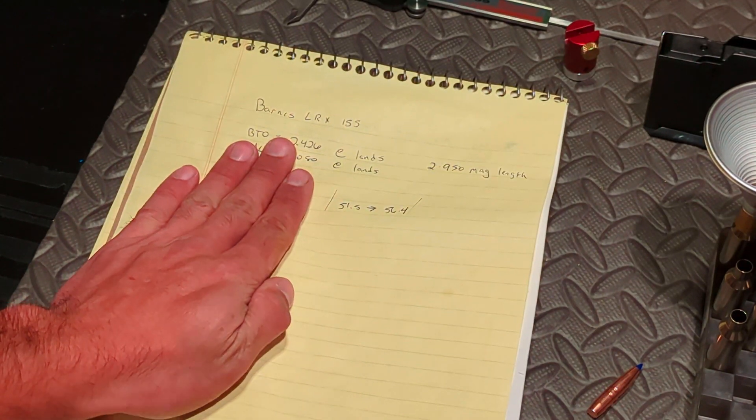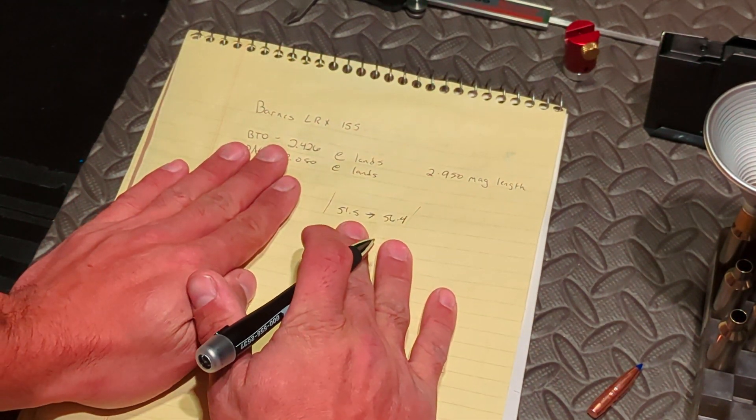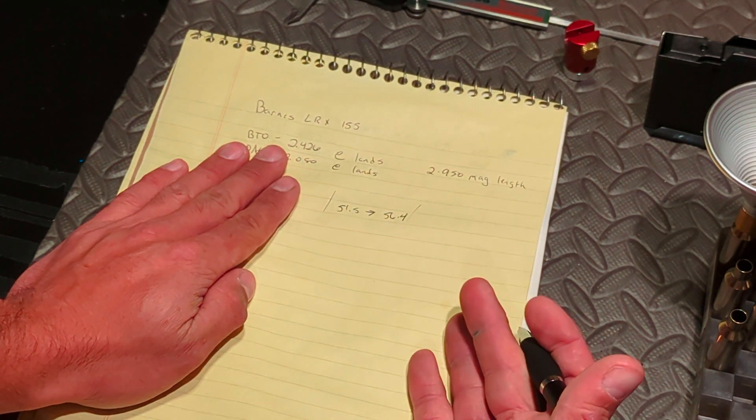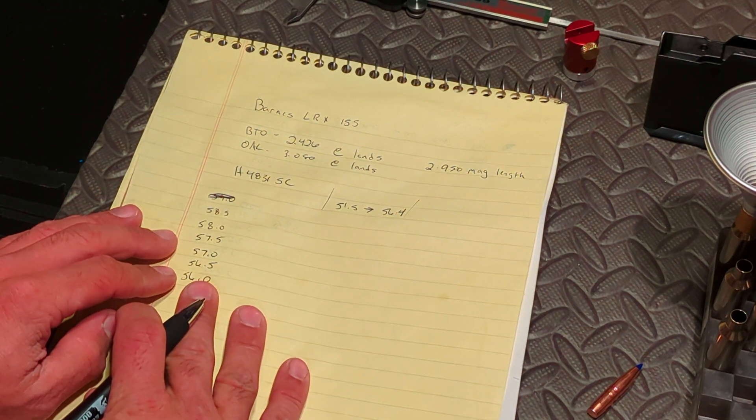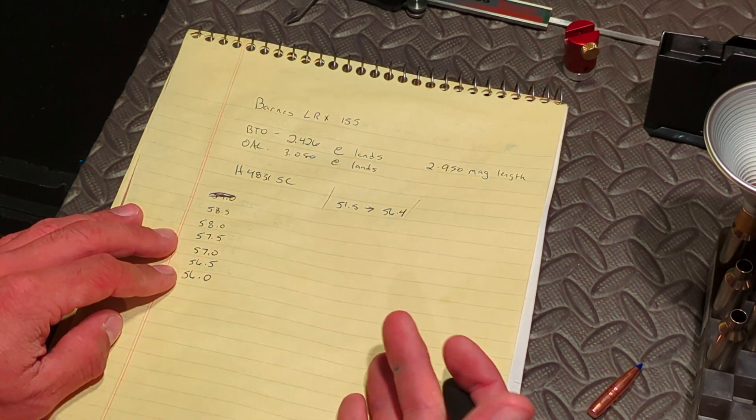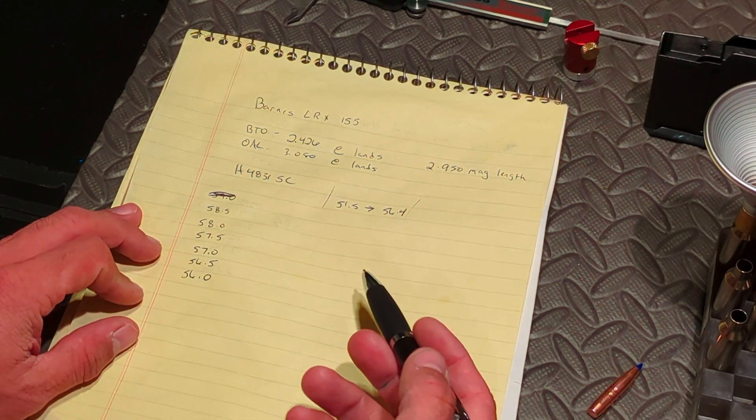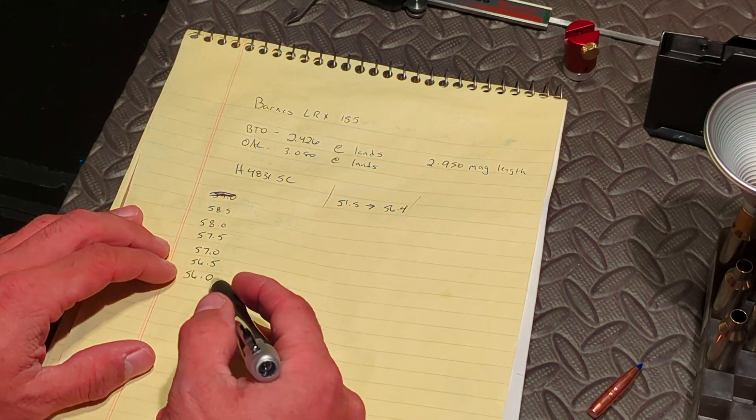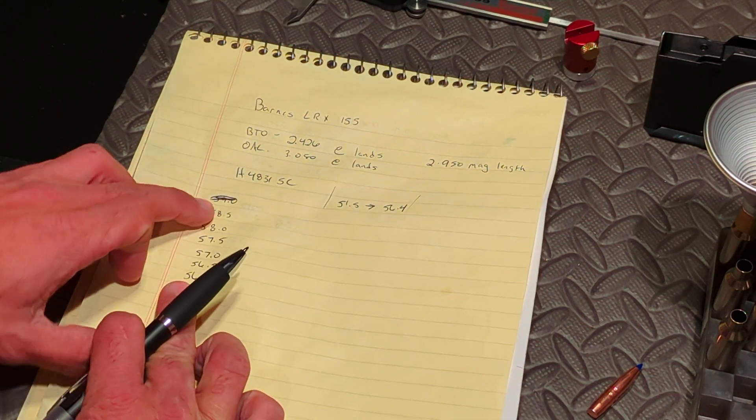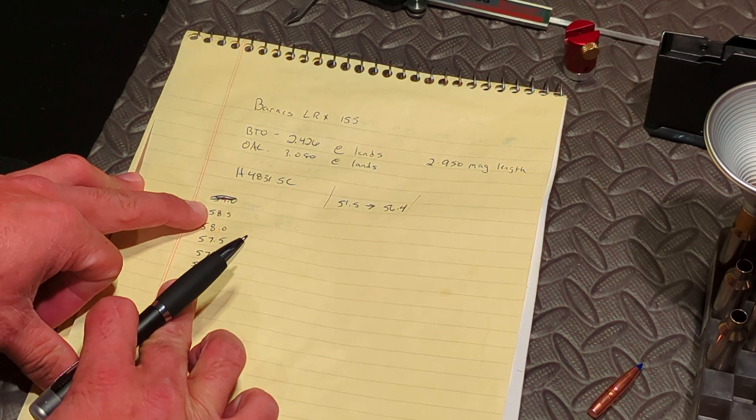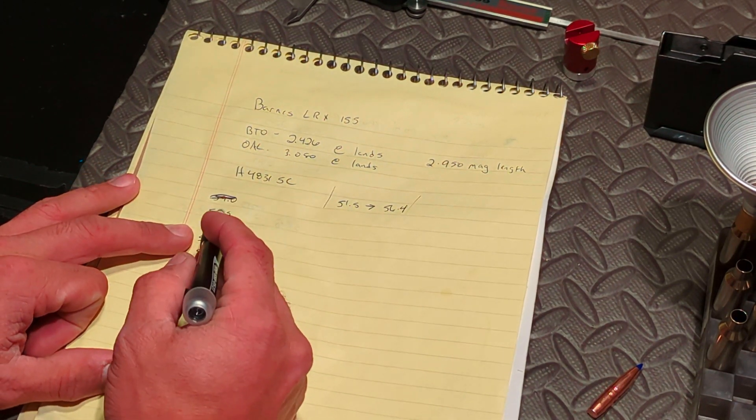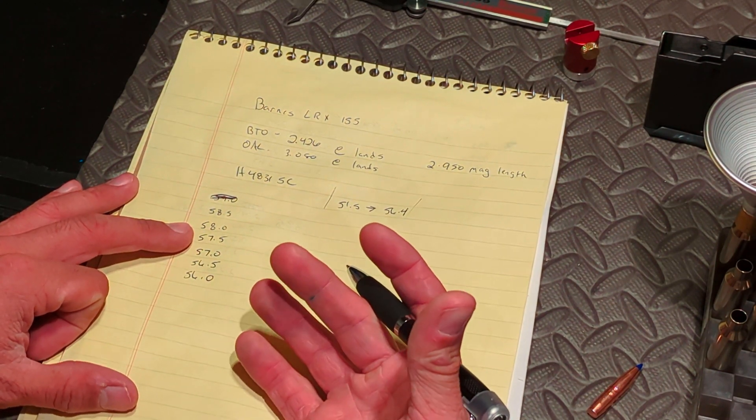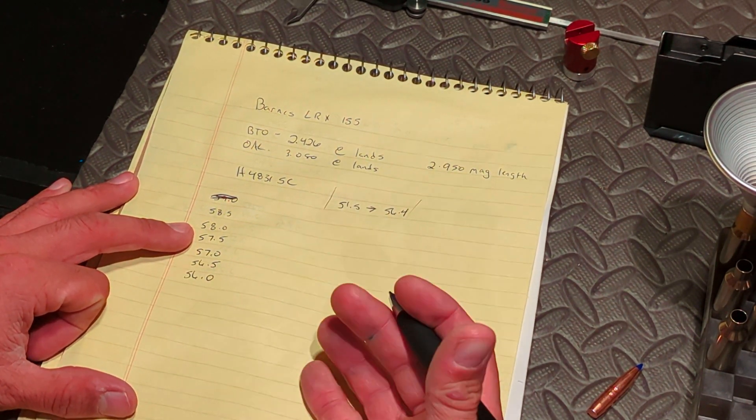I would highly recommend that you use this info or start with this info, especially if you have not used this powder before and this bullet before. I'm going to tweak it just a little bit because I'm really comfortable with this powder and I know how it performs. So what I'm going to do is I'm going to go to the upper end of what they recommend. So I'm going to start at 56 grains and ideally I would like to get to 58.5 grains, but I don't know if that's going to be possible or not.